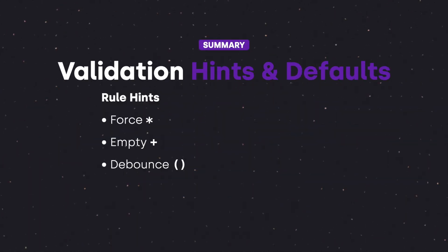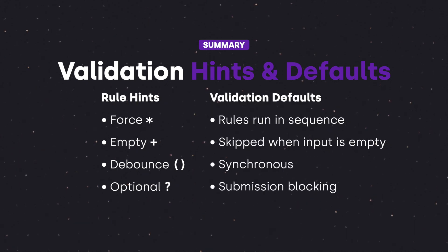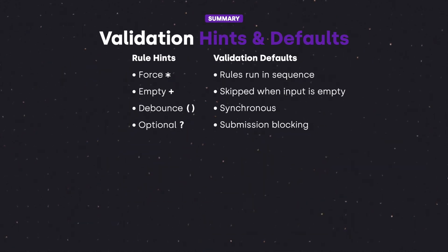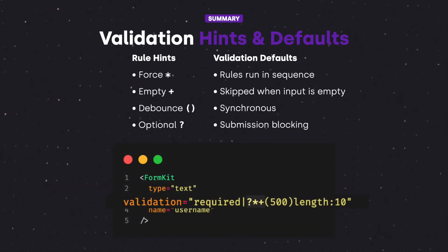Here's a list of all the hints and the defaults that they modify. You can also combine hints by placing multiple hints before a rule declaration. With over 20 validation rules built in and hints to modify how those rules are run, FormKit's validation system gives developers an abundance of functionality out of the box, all with a single prop. So that's a quick overview of validation rule hints and we'll see you next time.